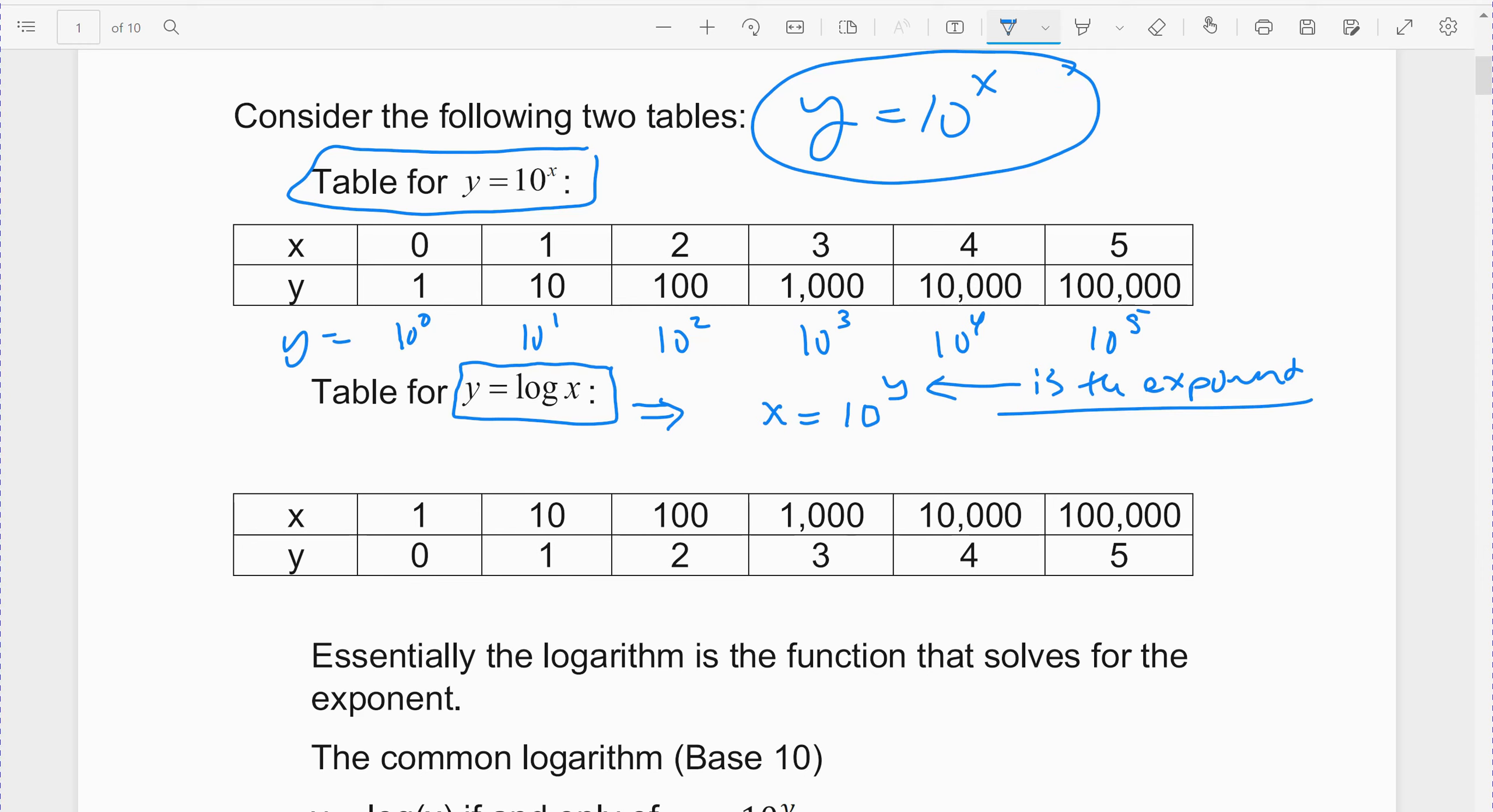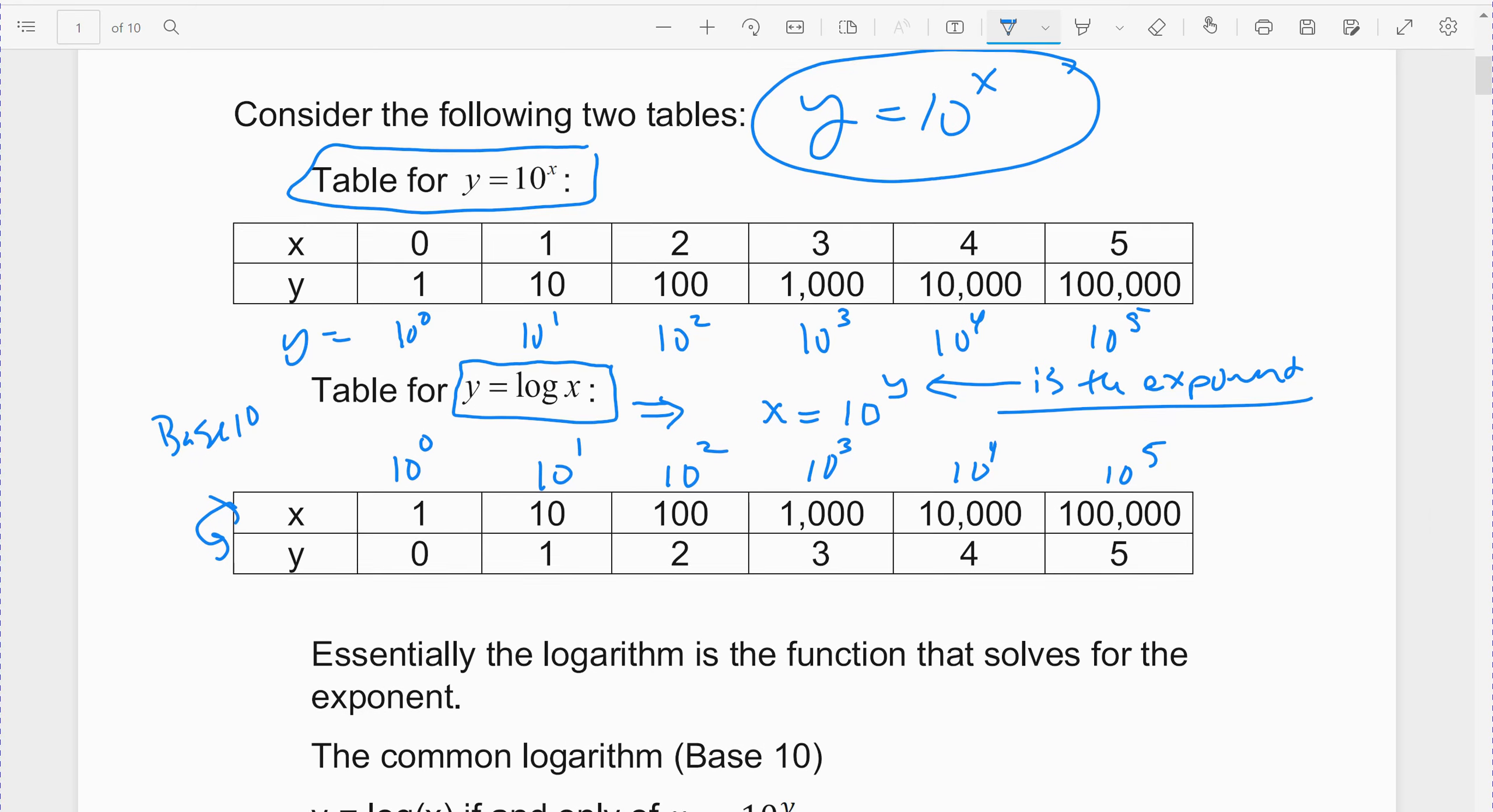What these represent is we flipped these two around. This represents the exponent now. Y is the exponent. X is what's coming out when I take my base and raise it to the exponent. It's still base 10. So y is the 0, so this is 10 to the 0. This is 10 to the 1st, 10 squared, 10 cubed, 10 to the 4th, and 10 to the 5th. A logarithm takes our original exponential function and flips it. That's what an inverse does. You take your x and your y and you flip it to get a new function where x and y are interchanged, swapped out.